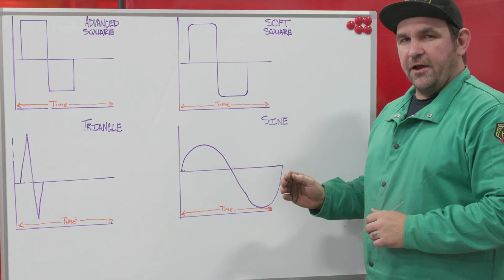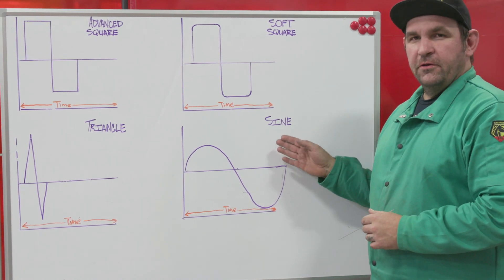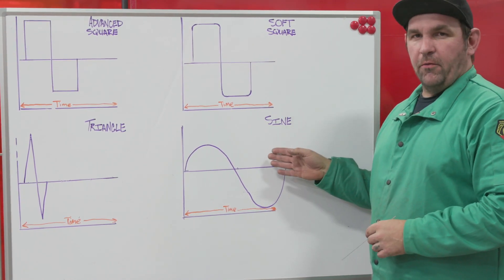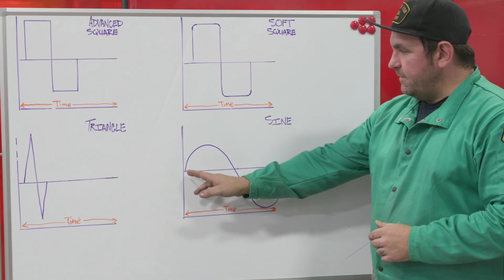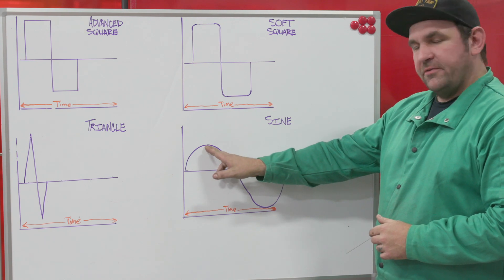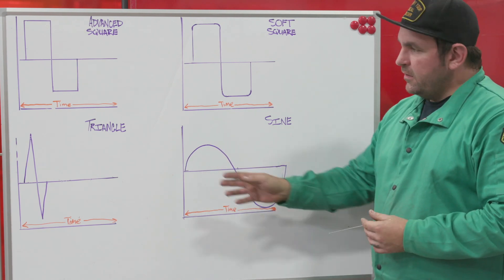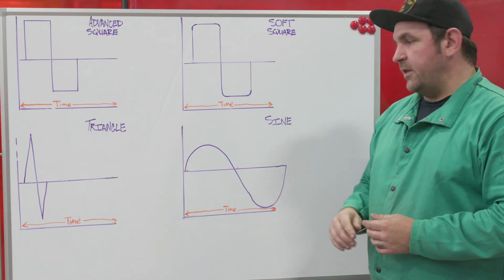We just got done running some triangle wave. We're back to look at sine wave. This is kind of your tried and true, your old school, your transformer waveform. It's a very smooth transition up and down, very minimum time spent at your peaks. So it's still kind of a low heat input waveform, but significantly more than triangle.